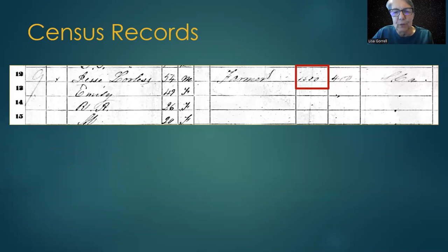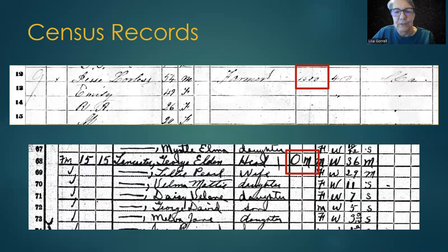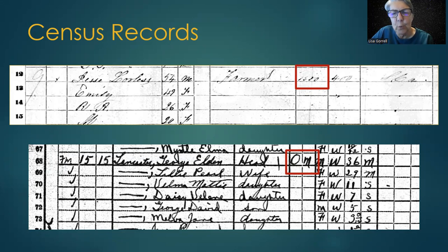Many of the census records have a column showing the value of real estate, like this one from 1860. Later censuses might show whether the property is owned or rented, such as in this 1920 census, where the O means the farm is owned and the M means that it is mortgaged. A non-mortgage property might show an F, meaning that it is free and clear.